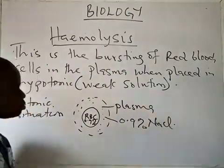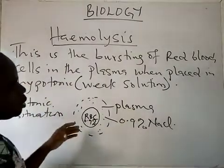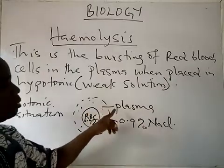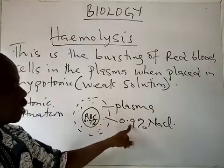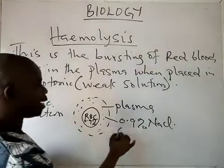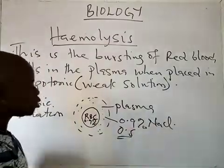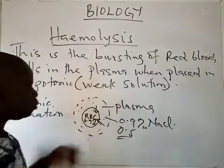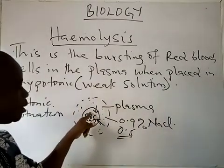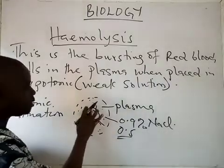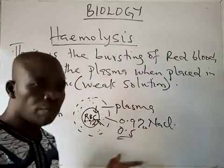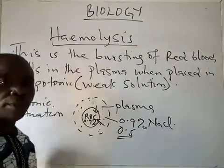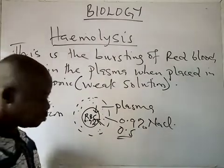Now, if anything happens that changes the concentration of sodium chloride in the plasma — usually when the concentration reduces to about 0.5% — anything that reduces the concentration of sodium chloride to 0.5% will cause endosmosis, drawing water into the red blood cell. That will create pressure inside the red blood cell, so the volume of the red blood cell will increase because of the endosmosis influx of water molecules, and there will be bursting of the red blood cells.